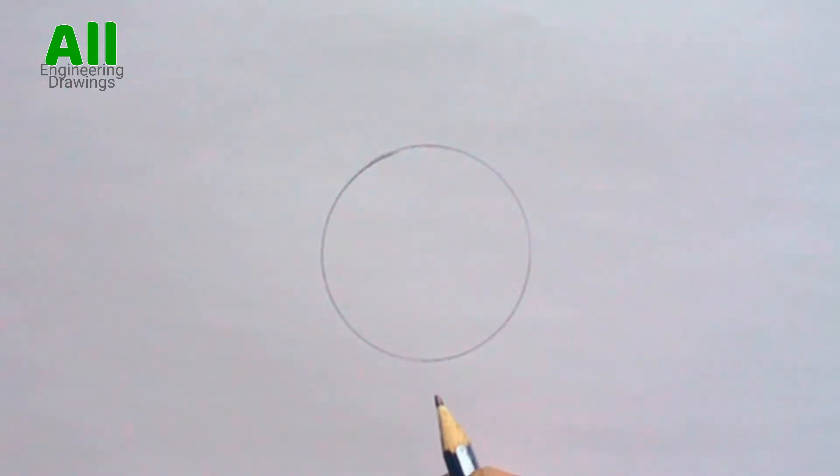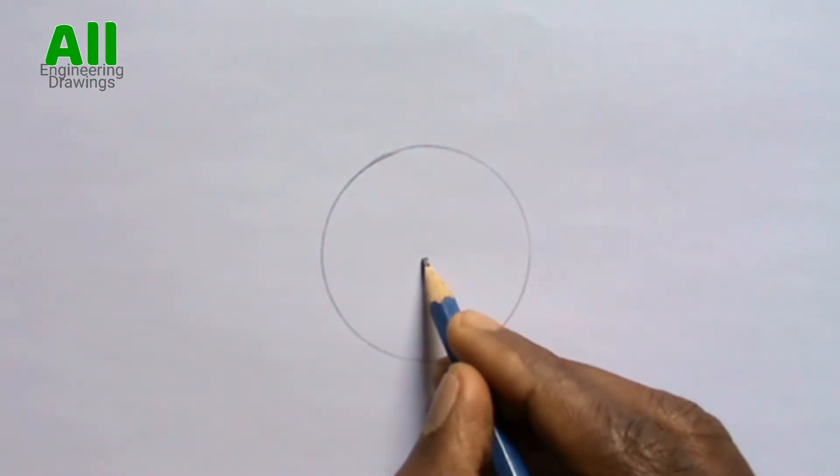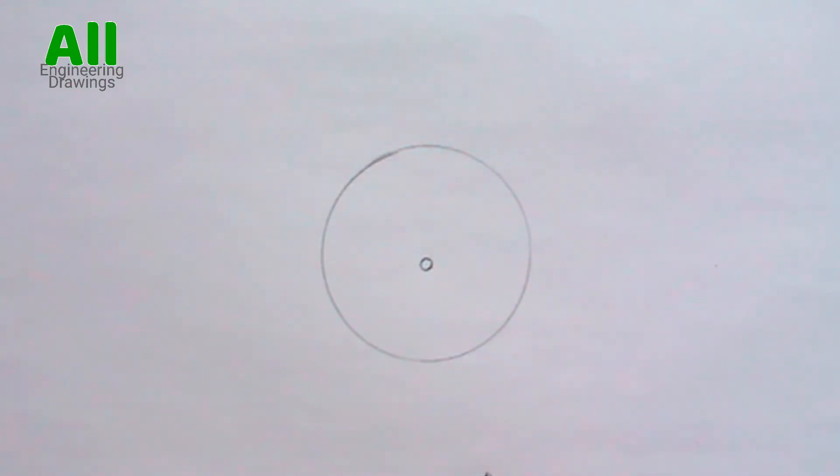After drawing the required cycle, label the center. Now mark the given point and label it.